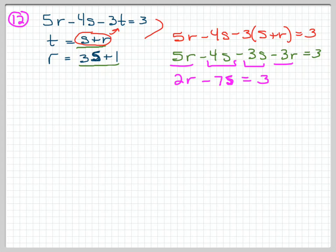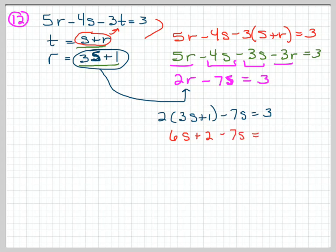That's an s right there. Now I'm going to use and get my third equation involved. I'm going to replace my r's with an equation that only has s's in it. So I'll go 2 times 3s plus 1 minus 7s equals 3, and continuing to clean that up, 6s plus 2 minus 7s equals 3.